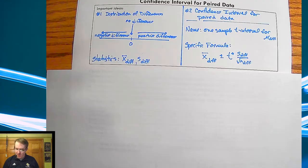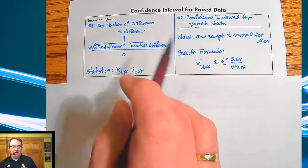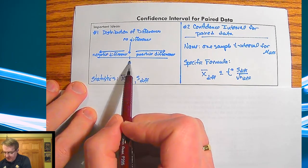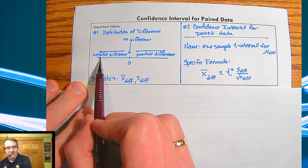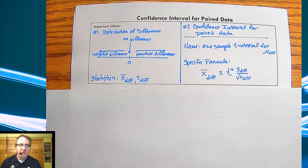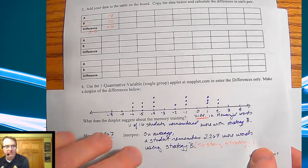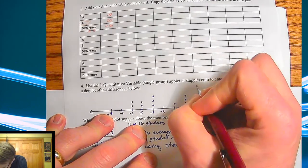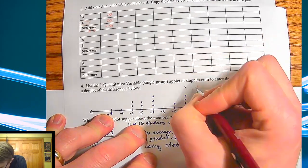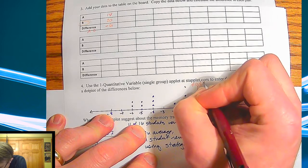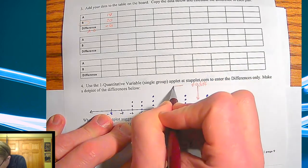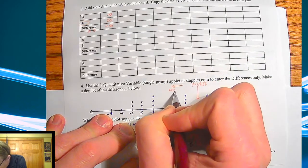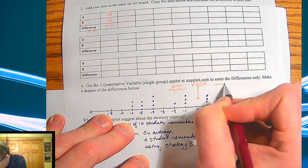The distribution of differences basically falls like this. You're going to have a dot plot with zero in the middle. Everything to the left is going to be a negative difference, everything to the right is going to be a positive difference, and no difference is zero.